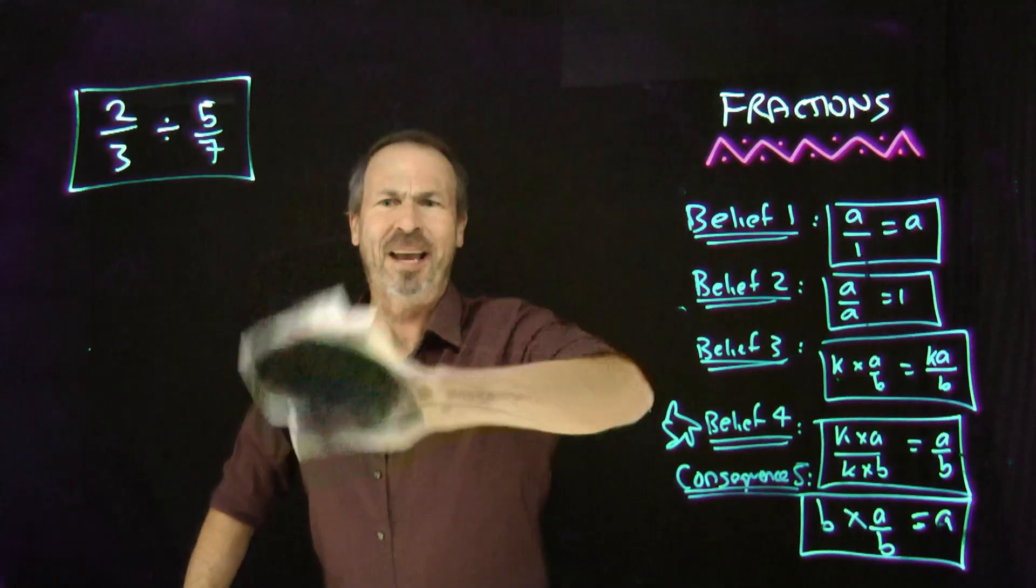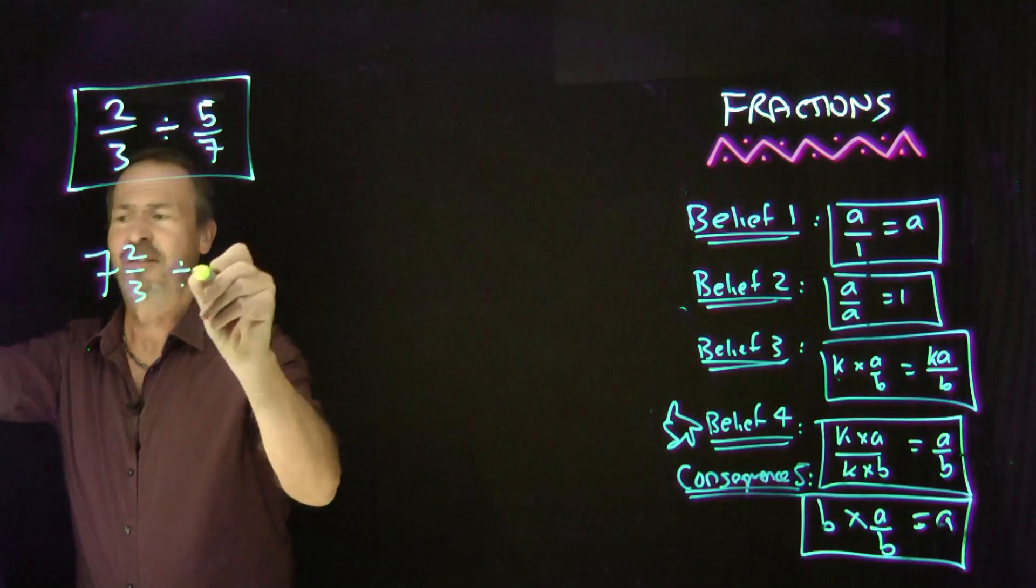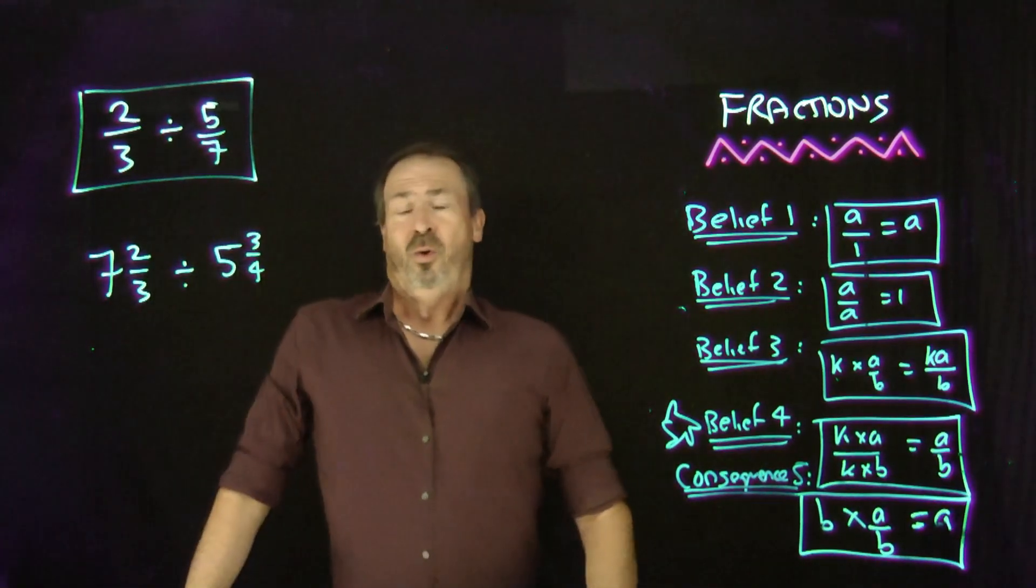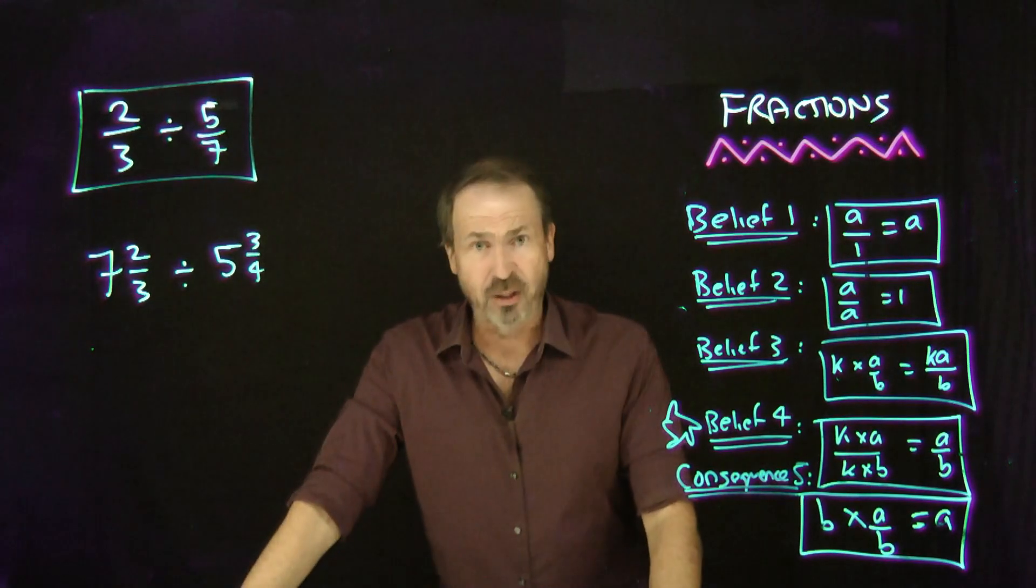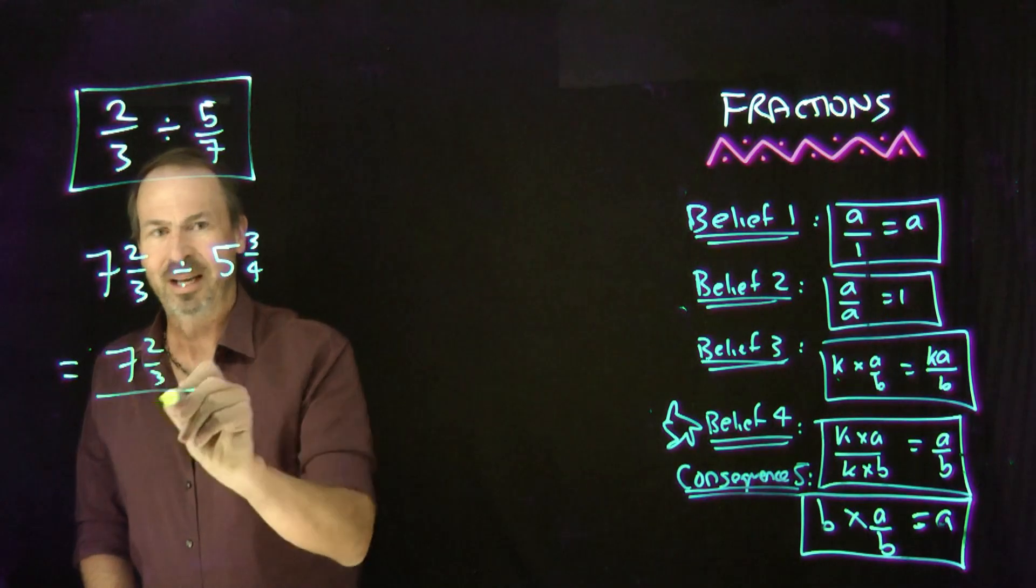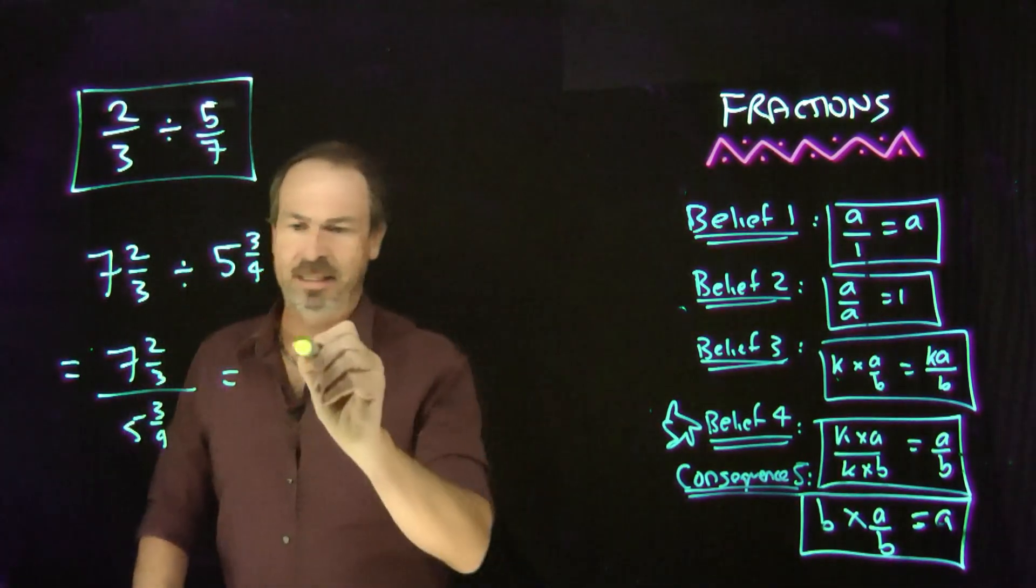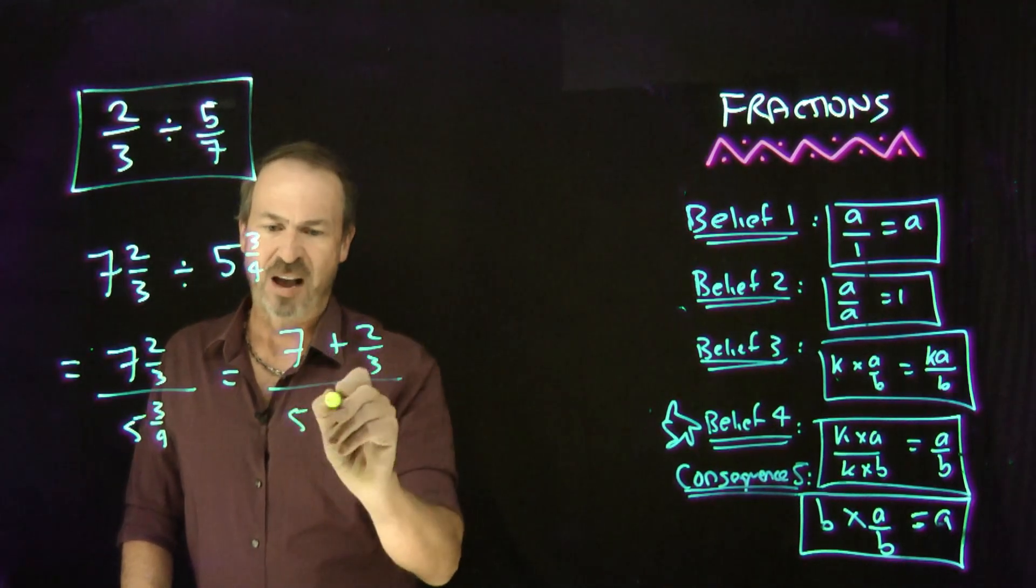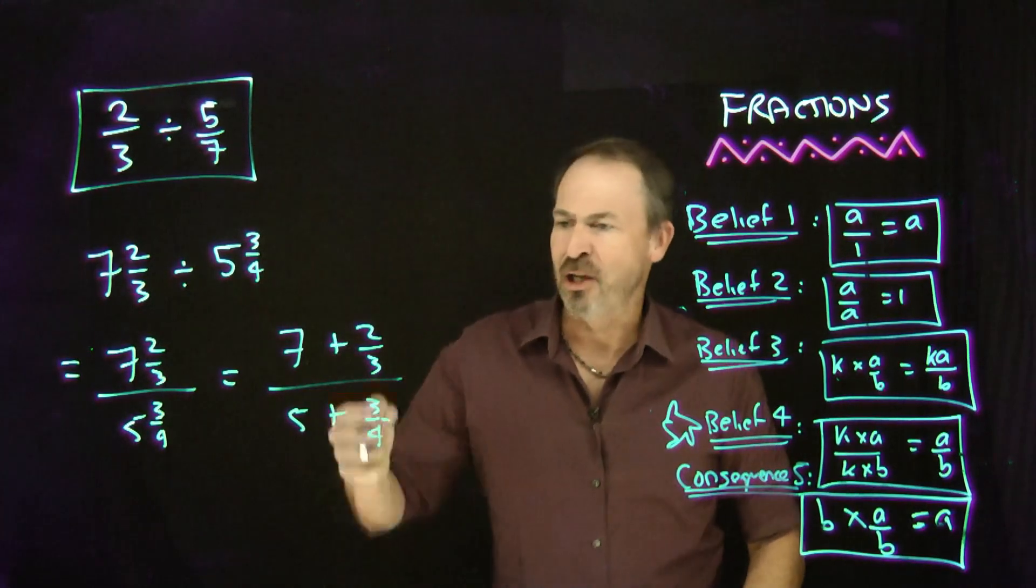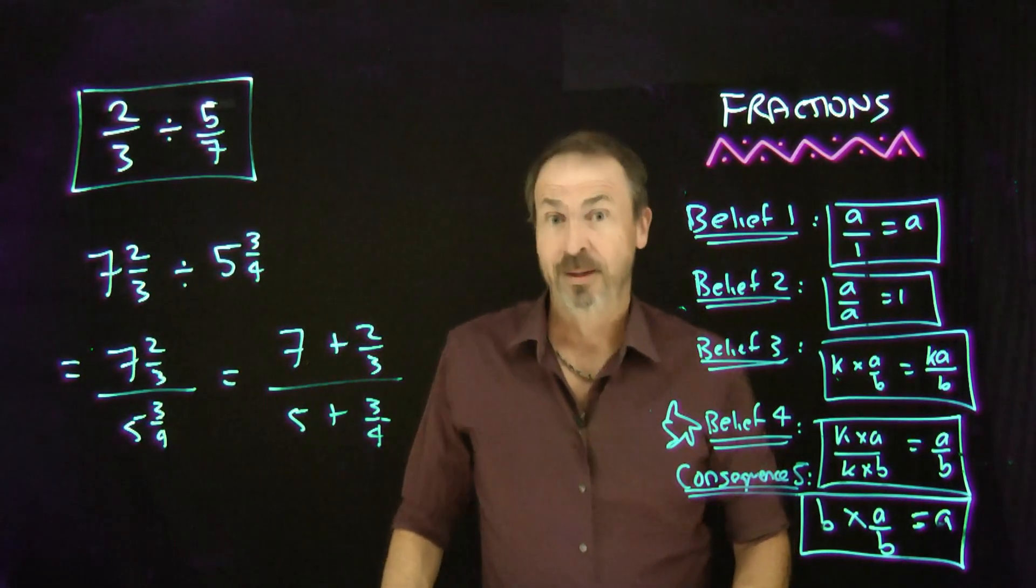Unless I do a more complicated one, which I shall do. Let's try this one. Let's try 7 and 2 thirds divided by 5 and 3 quarters. Whoa. So this is really a fraction because a fraction is an answer to a division problem. So this is really the fraction 7 and 2 thirds over 5 and 3 quarters. Let's be very clear about the mixed numbers. It's really 7 plus 2 thirds. It's really 5 plus 3 quarters. And what I don't like about this is the mention of thirds. And I also don't like the mention of quarters.